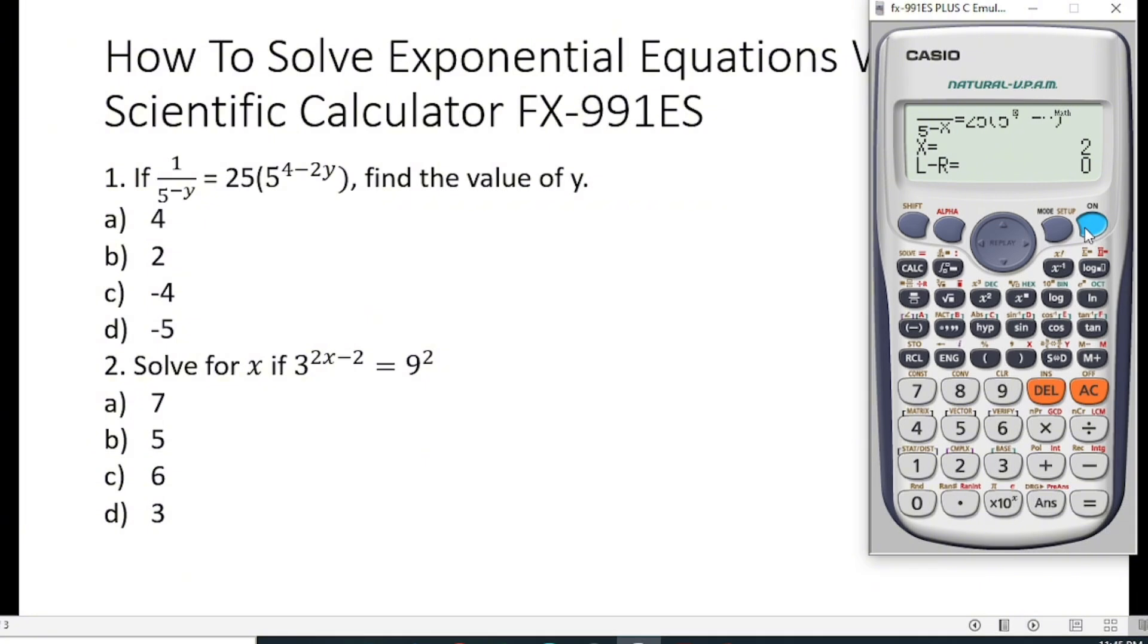So we will go straight to number 2, which is telling us to solve for x if 3 raised to the power (2x minus 2) is equal to 9 raised to the power 2. So let's go to our calculator and type it in.